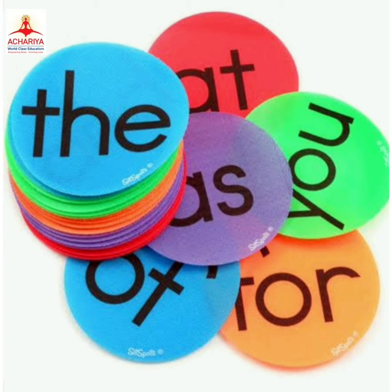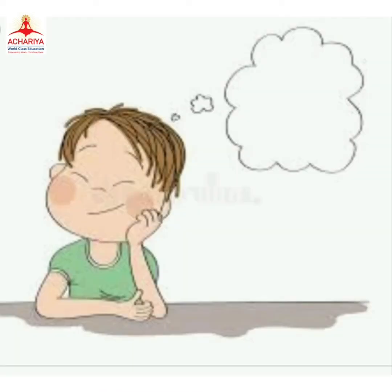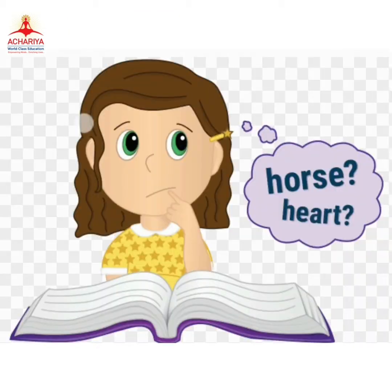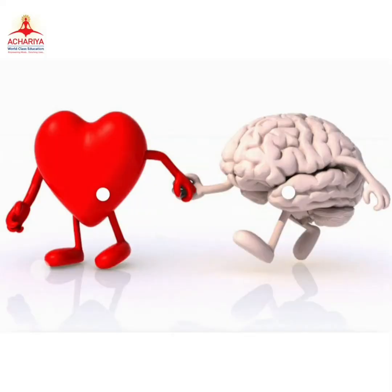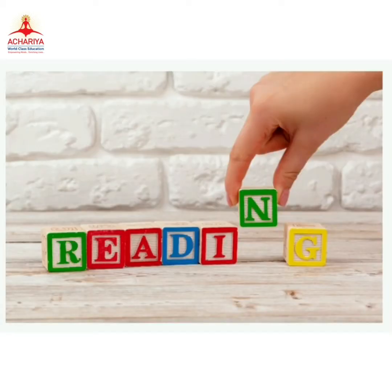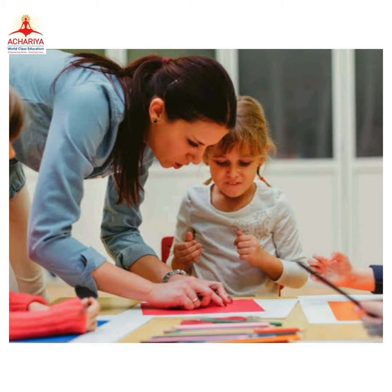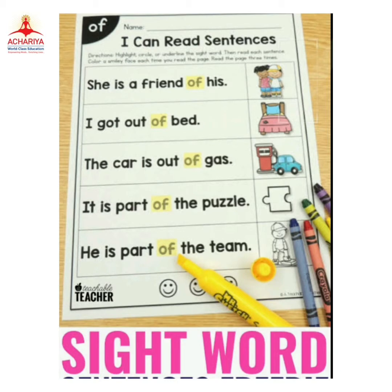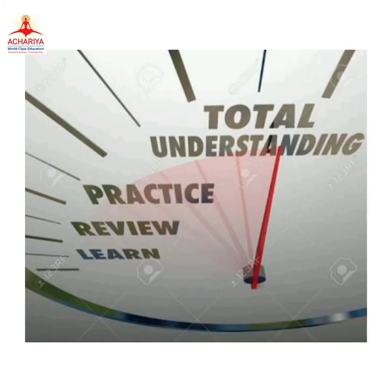Sight words are words that appear most frequently in a text. These high-frequency words may not be easily pictured and have to be memorized and understood. Decoding of these words is really difficult and they need to be recognized and read without decoding. Simply said, sight words are words to know by heart by young readers. Once students learn to quickly recognize these words, reading becomes easier. Here we have a set of planned activities to facilitate reading and understanding the usage of sight words by framing simple sentences.